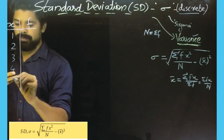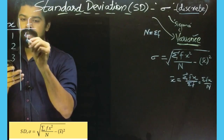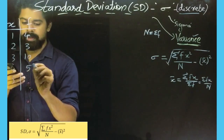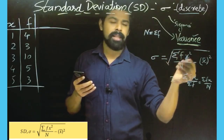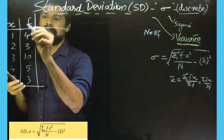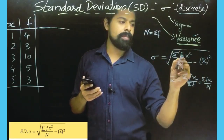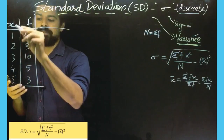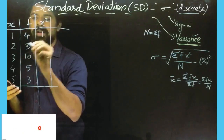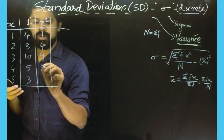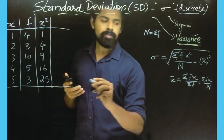Now we will try values 1, 2, 3, 4, 5 — the number of students. The frequency is denoted as f. This is our table. We substitute the values into the formula: sigma f into x squared and x-bar. We compute x²: 1 squared is 1, 2 squared is 4, 3 squared is 9, 4 squared is 16, 5 squared is 25.